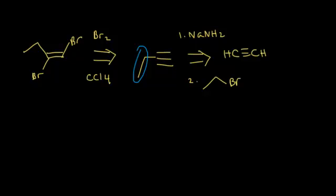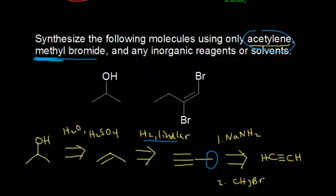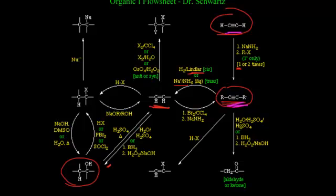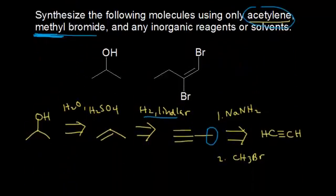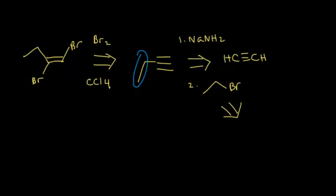We use retrosynthesis again. I have an alkyl halide — how do I make an alkyl halide from an alkyne? It's helpful to look at the flow sheet. I can make an alkyl halide from an alkene if I add a hydrogen halide, HX. So retrosynthesis: I'm going to make my alkyl halide from an alkene using a hydrogen halide. My alkene is just ethene or ethylene, and my halogen is bromine, so my hydrogen halide would be HBr. If I add HBr to ethylene, I will make ethyl bromide.